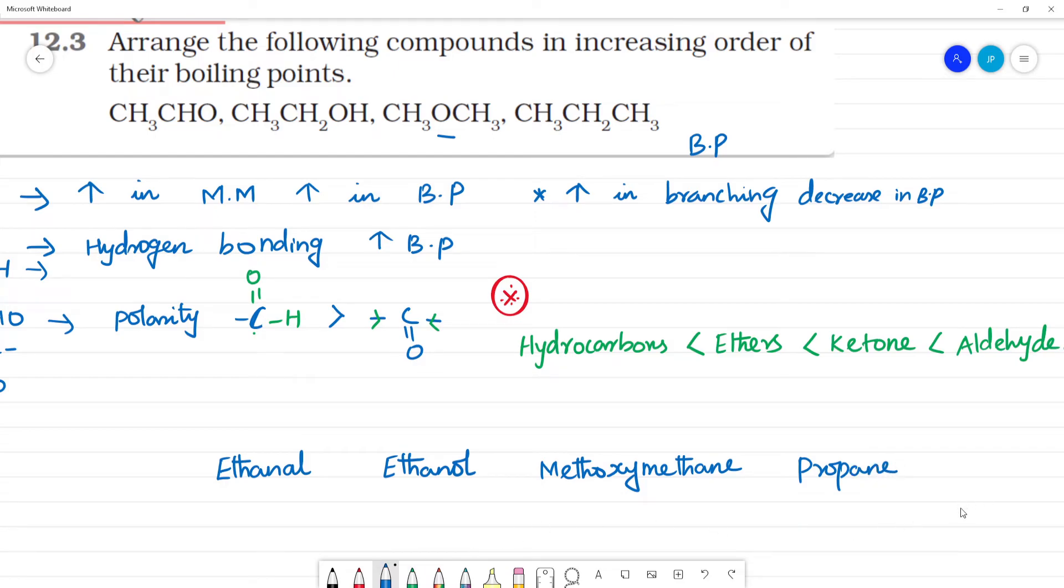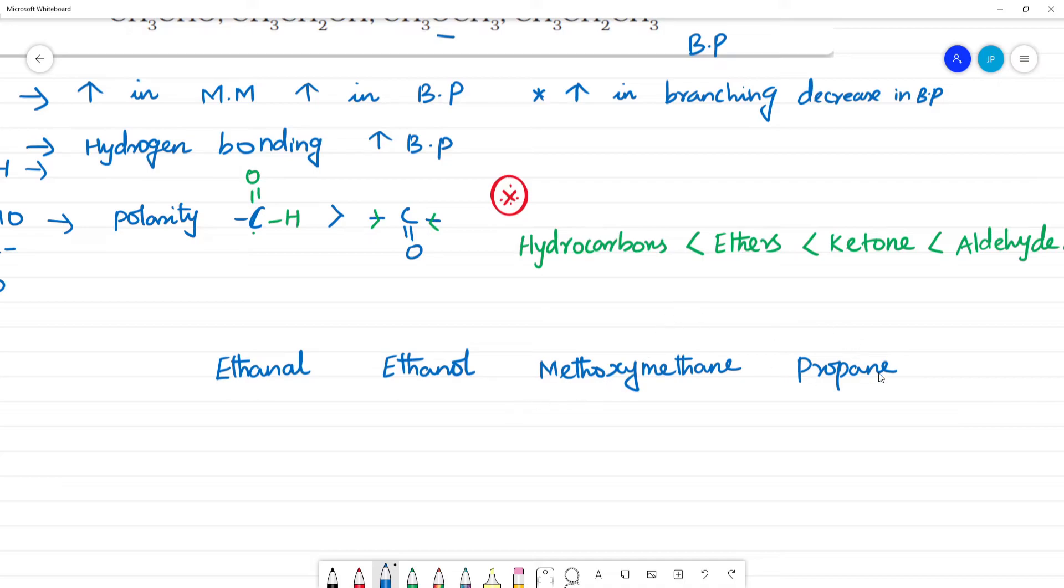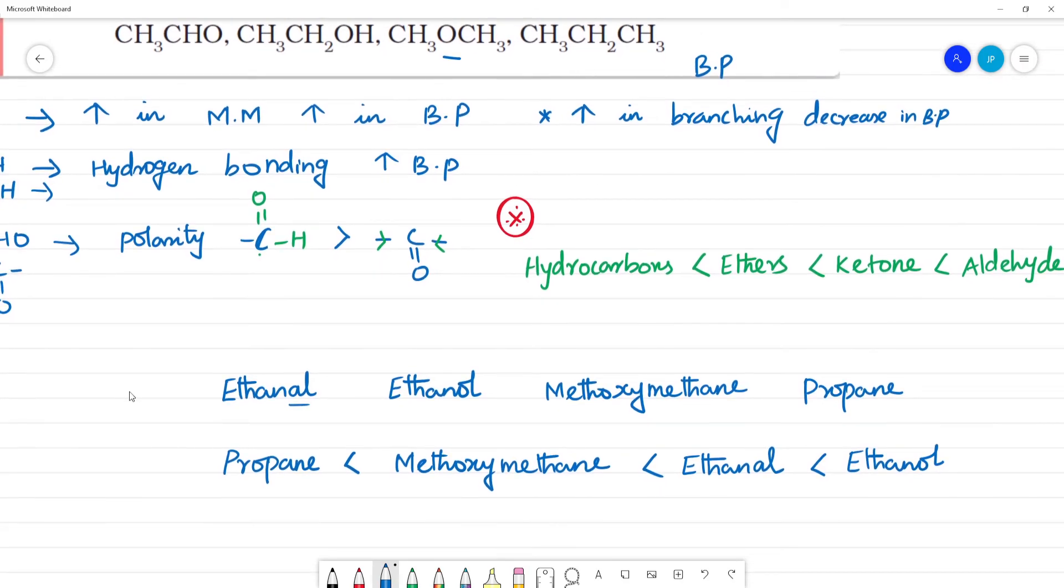So when we calculate molecular mass, propane will be having least. That is hydrocarbon. Propane will be having least boiling point. What is propane? Propane molecular mass, this is 3, 4, 5, 6, 7, 8, 4, this is 44. This is propane molecular mass.